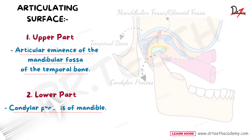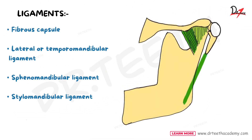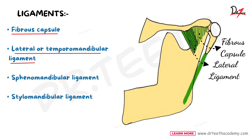Now let's talk about its ligaments. A total of four ligaments are present here. The first is the fibrous capsule, which covers the joint. The second is the lateral temporomandibular ligament, present laterally between the temporal bone and the mandible. These two are the main ligaments. Apart from these two, we have two more accessory ligaments.